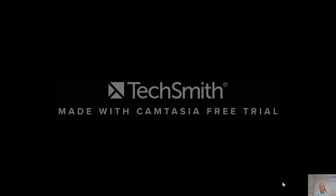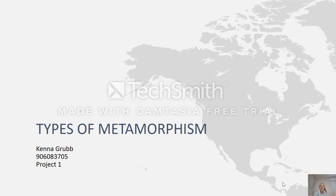Hi, my name is Kenna Grubb and for this project I was chosen to cover types of metamorphism. Metamorphism occurs all over the world and can be seen anywhere, but there are many types and they all produce a different type of rock. Metamorphism is where pressure, temperature, and natural forces occur to change a rock — it takes an old rock from the earth and changes it into something new and valuable. If we didn't have this process, we wouldn't have a lot of things that we have today.